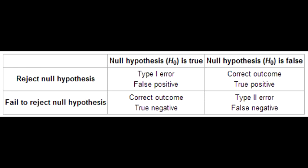Type 2 error (beta) is stating there is no effect when one exists — failing to reject the null hypothesis when it is false. Beta indicates the probability of making the type 2 error. Type 2 error is the false negative error. Mnemonic: you were 'blind' to the difference that existed — like setting a guilty man free, while type 1 error is like convicting an innocent man.